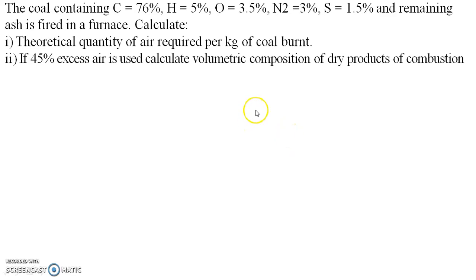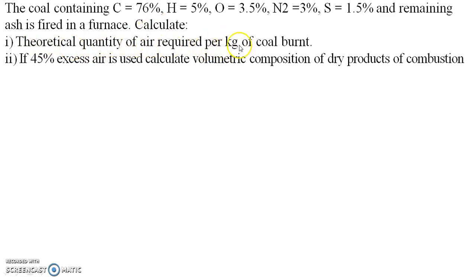Take an example of this numerical. Here all the components of the fuel are given in percentage: carbon is 76%, hydrogen 5%, oxygen 3.5%, nitrogen 3%, sulfur 1.5%, and the remaining is ash present in the furnace. The question is: calculate the theoretical quantity of air required for 1 kg of the coal burned.